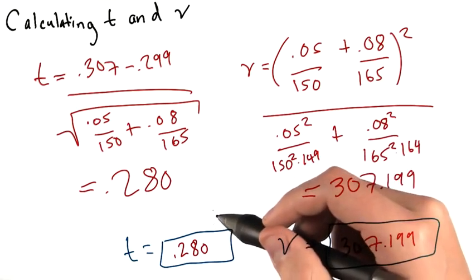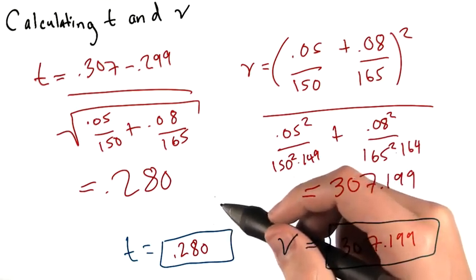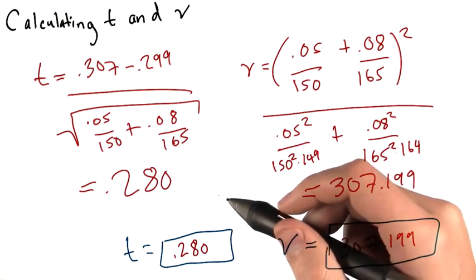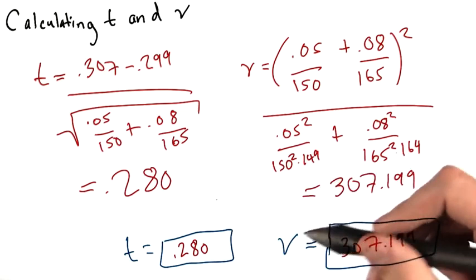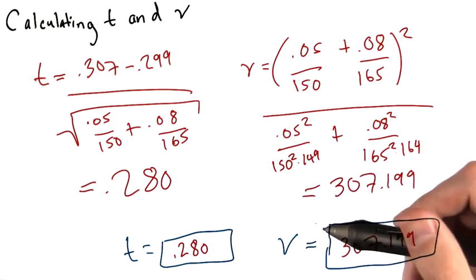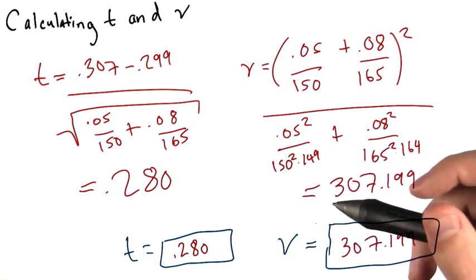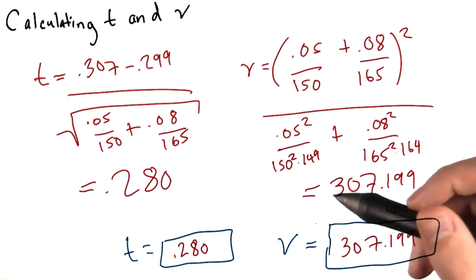The t statistic here is sort of some idea of how extreme our result is and how likely it is to disprove our null hypothesis. Meanwhile, nu here is kind of some idea of how many independent variables went into calculating this t value.